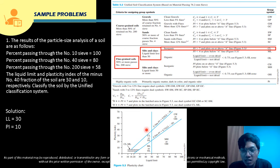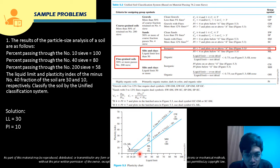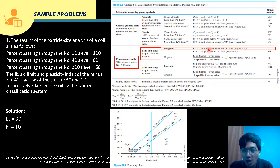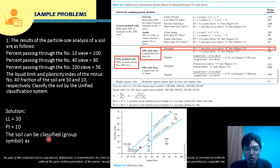On the plasticity chart, LL = 30 on the x-axis and PI = 10 on the y-axis. The point plots above the A-line, so the second criterion is satisfied. Both criteria (PI > 7 and plots on or above A-line) are satisfied, so the group symbol is CL.